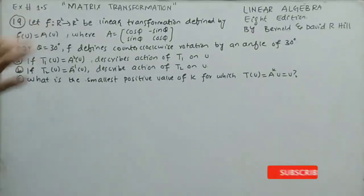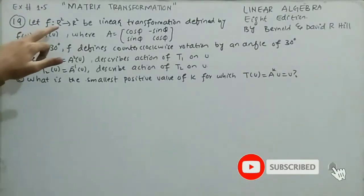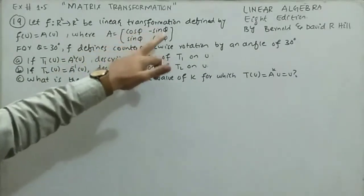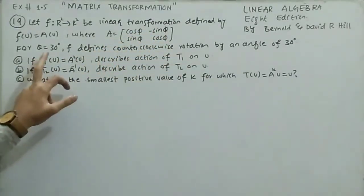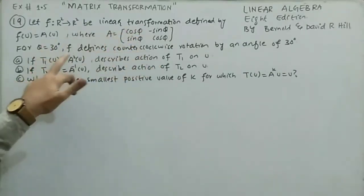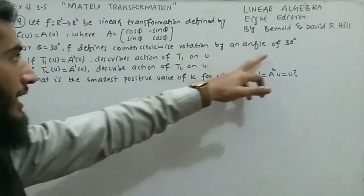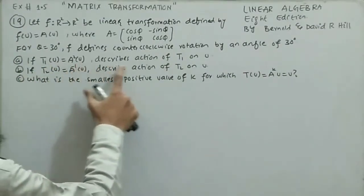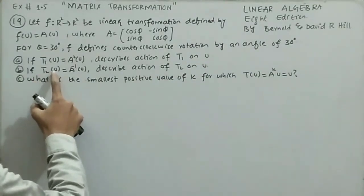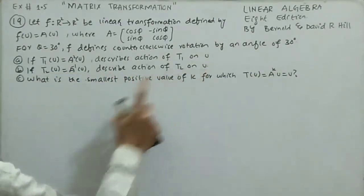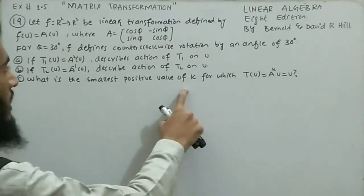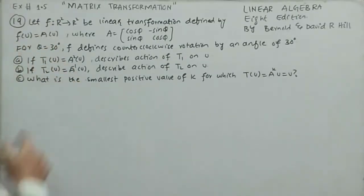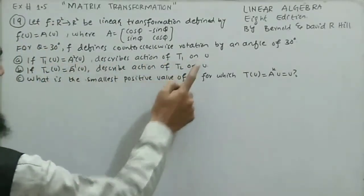Now solving the last question of exercise 1.5. Let a function from R² to R² be the linear transformation defined by f(u) = Au, where A = [[cos φ, -sin φ],[sin φ, cos φ]] for φ = 30°, defining a counterclockwise rotation by 30°. Part one: if t1(u) = A²u, describe the action of t1 on u. Part two: if t2(u) = A⁻¹u, describe the action of t2 on u.